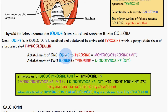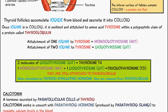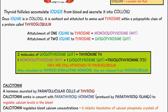Attachment of one iodine to tyrosine gives us monoiodotyrosine, otherwise known as MIT. Attachment of two iodines to tyrosine gives us diiodotyrosine, or DIT. Two molecules of diiodotyrosine equals thyroxine T4. One molecule of MIT and one DIT gives us triiodothyronine, or T3. Both T3 and T4 remain attached to thyroglobulin until stimulated by thyroid stimulating hormone, at which point they are released.